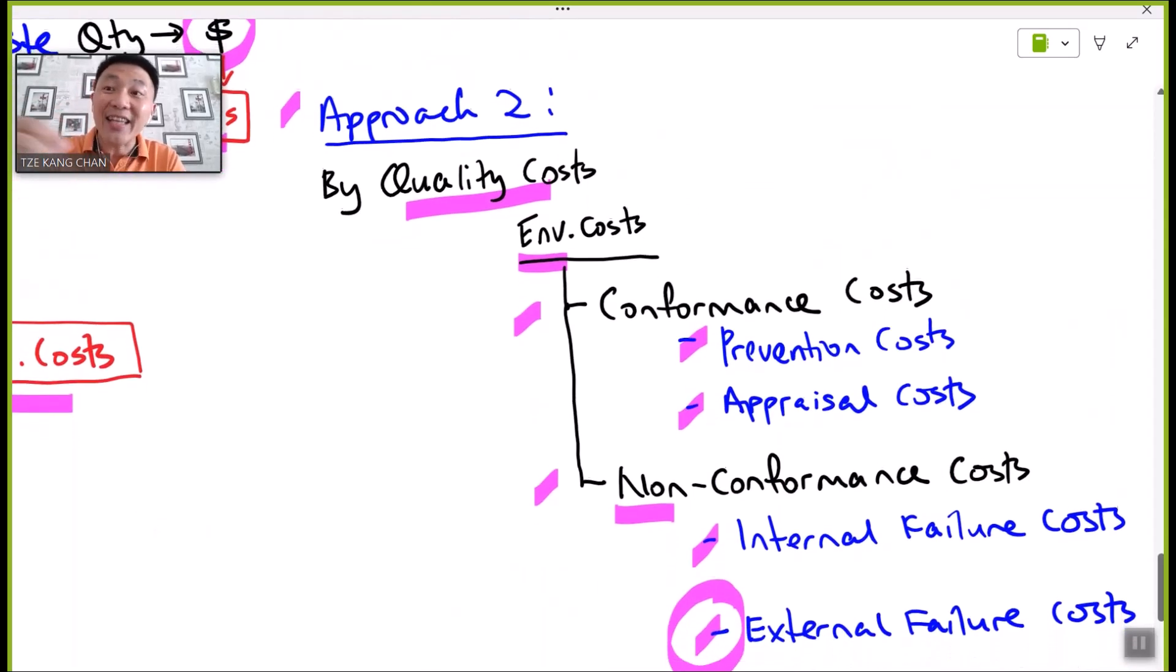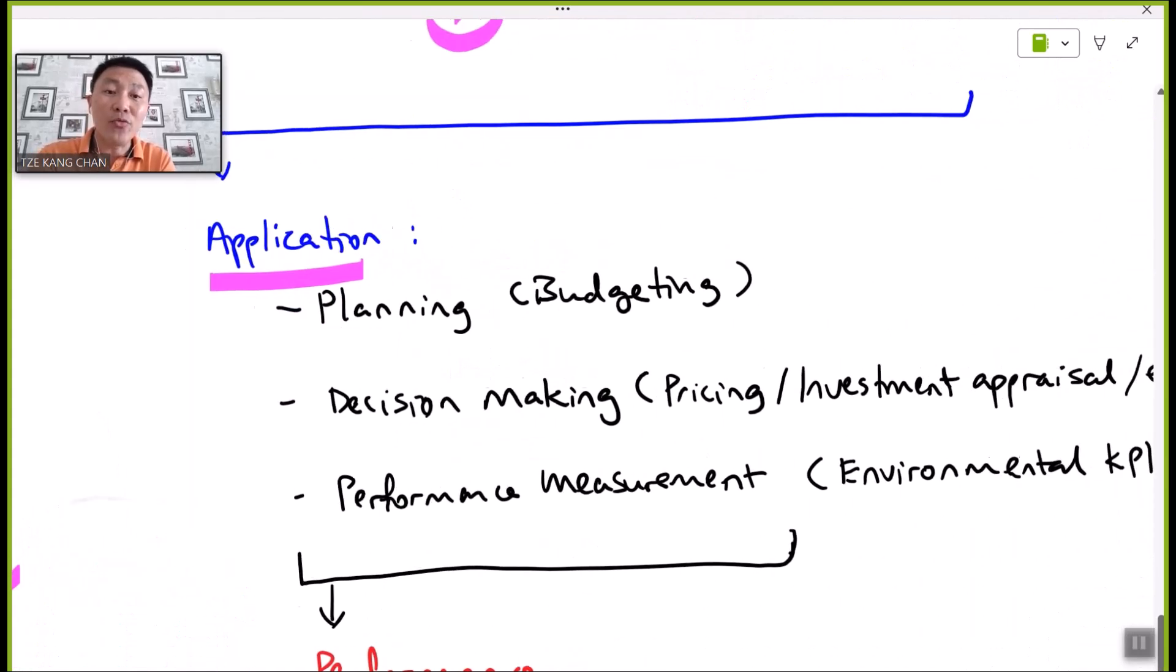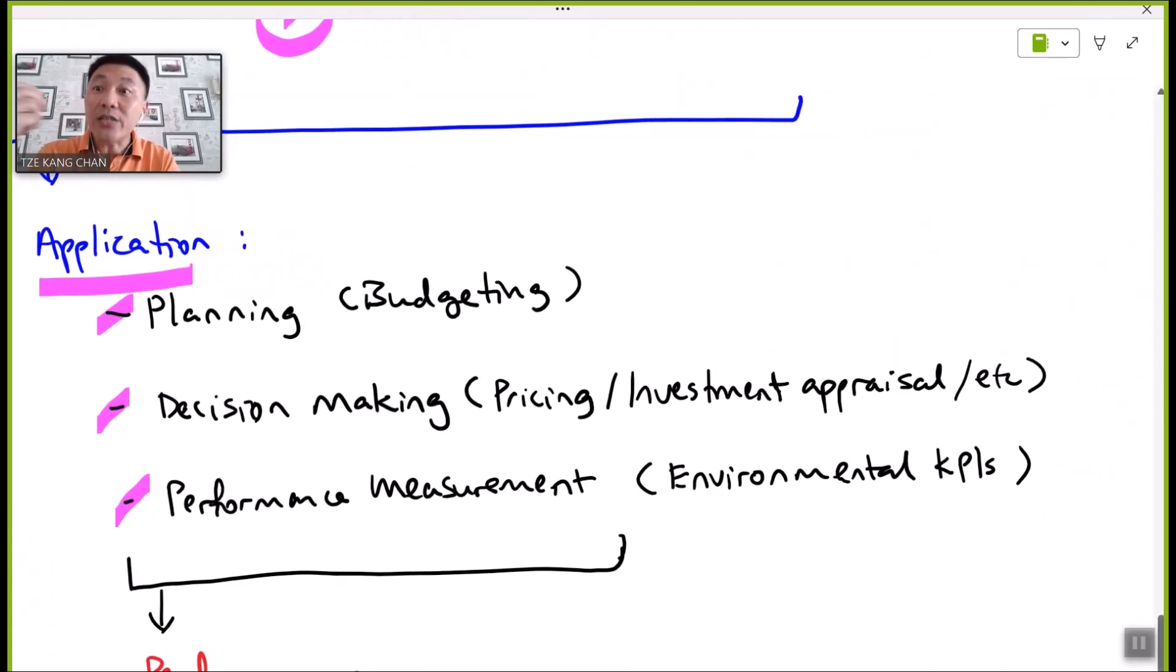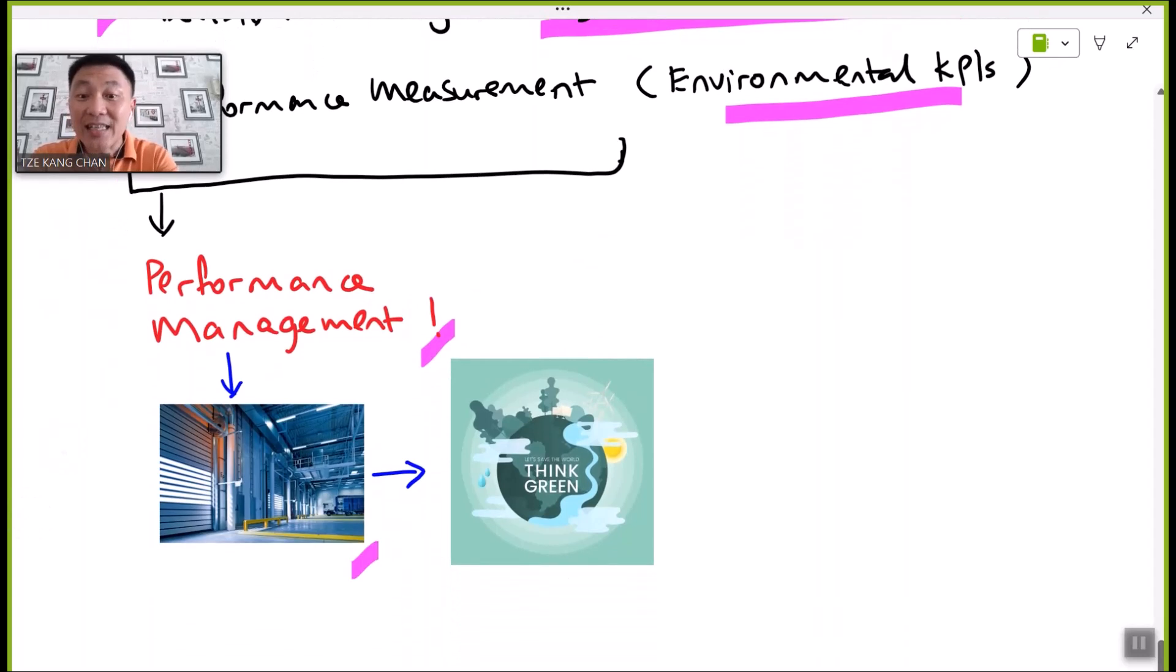With the clear analysis of such costs, this information will be applied in the following roles of management accounting: planning, decision-making, and performance measurement. These roles play a vital element in taking part in activities such as budgeting, pricing, investment appraisal, as well as designing of KPIs. And all this makes up part of the performance management of modern businesses that strive towards a greener physical environment.